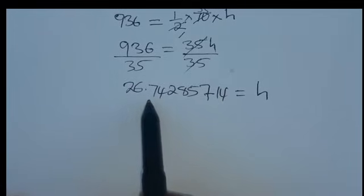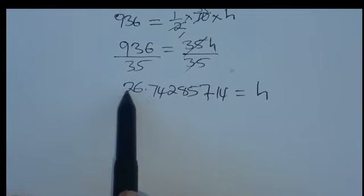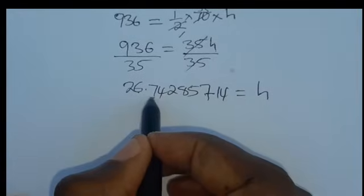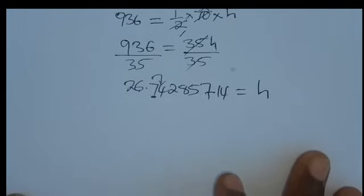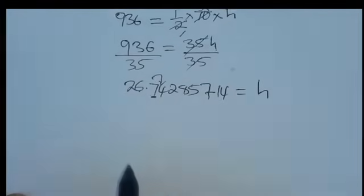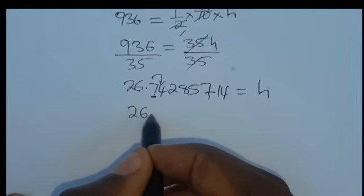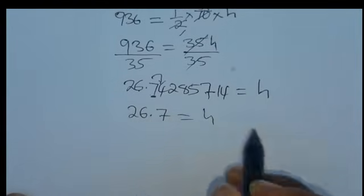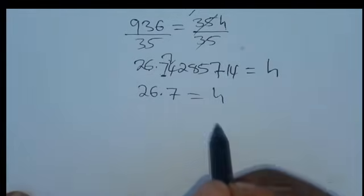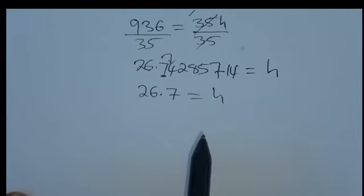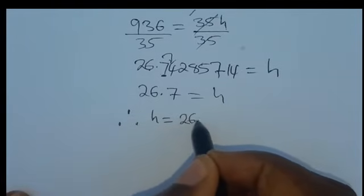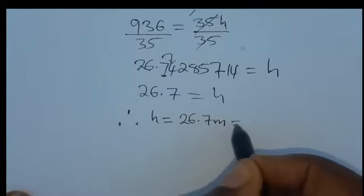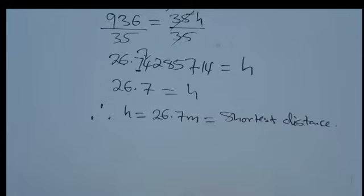Rounding 26.7428 to three significant figures: the third significant figure is 7, and the neighbor is 4, which is less than 5, so we round down. Therefore h = 26.7 meters, which is the shortest distance from Q to PR.